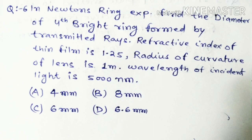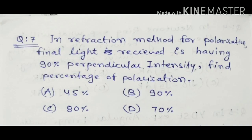Question number six: in Newton's ring experiment, find the diameter of the fourth bright ring formed by the transmitted rays. The refractive index of the thin film, radius of curvature, and wavelength are all given. You can find the answer easily if you are preparing with a good strategy.